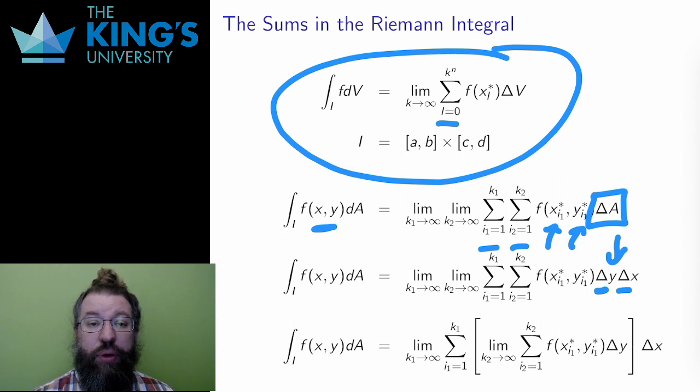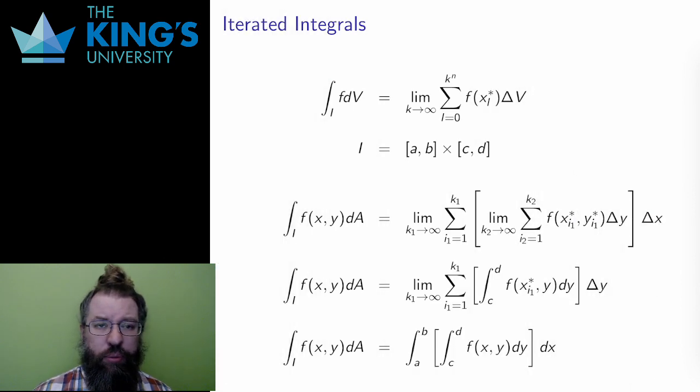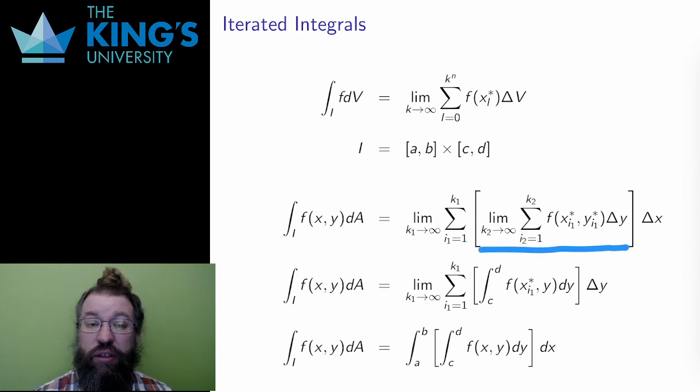Then I can put the limit of the y piece inside the sum of the x pieces. I can do this because this sum and limit don't directly affect each other, because they deal with different variables. But when I do this, the term within brackets is just the single variable Riemann definition of the integral in the y variable. I can write it this way, using the y bounds from c to d from the interval.